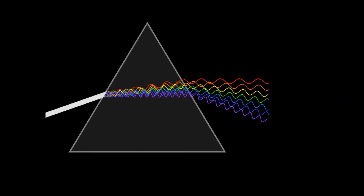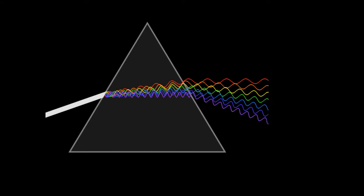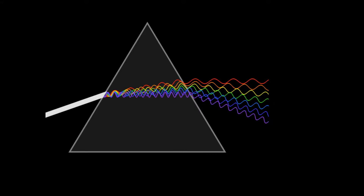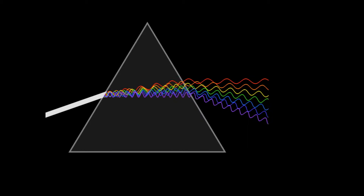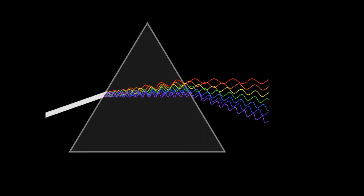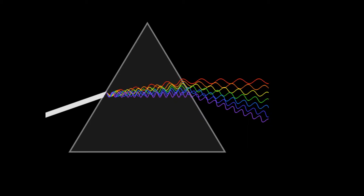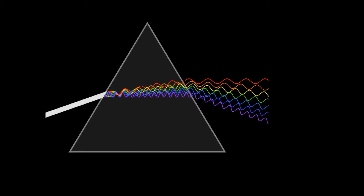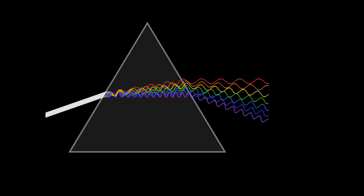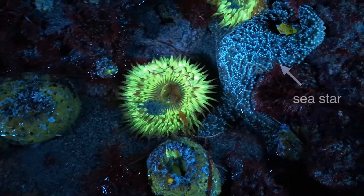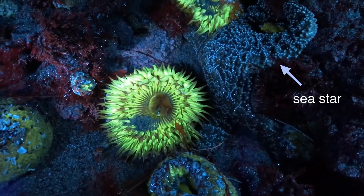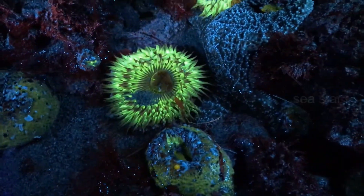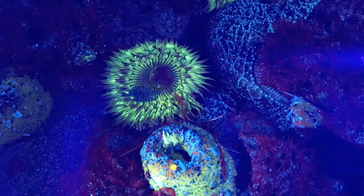For example, we put a yellow filter in front of these organisms that are illuminated and now we see all the fluorescence in the yellow part of the spectrum come alive. You could probably do this with a red filter or some other filter and other colors will come alive too. A lot of marine organisms use this biofluorescent property to ward off predators or possibly to look for other mates.